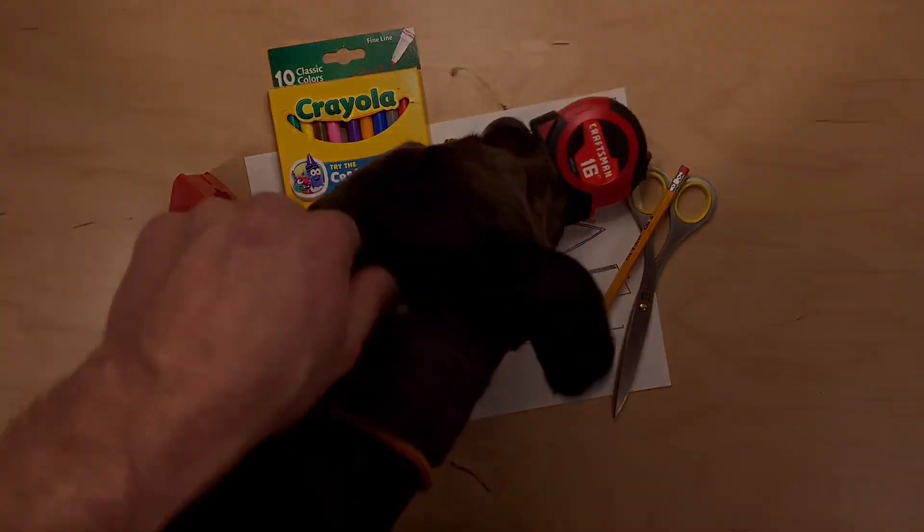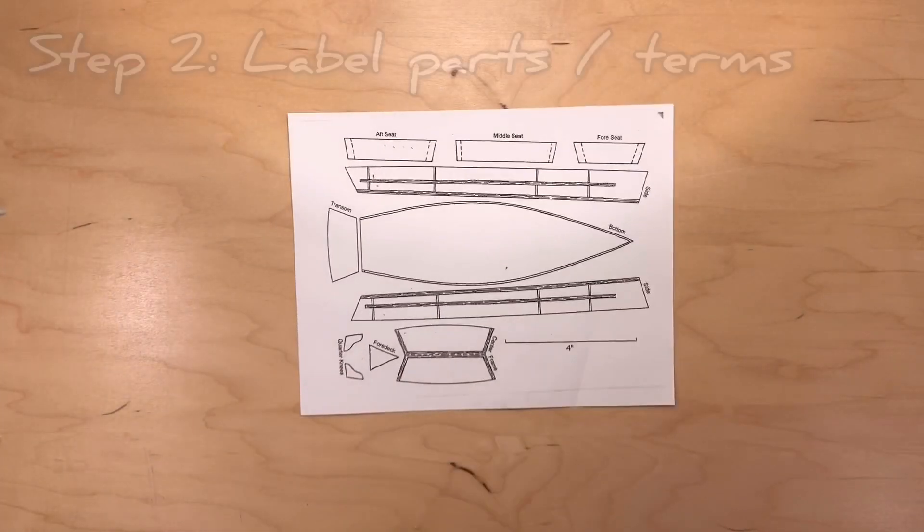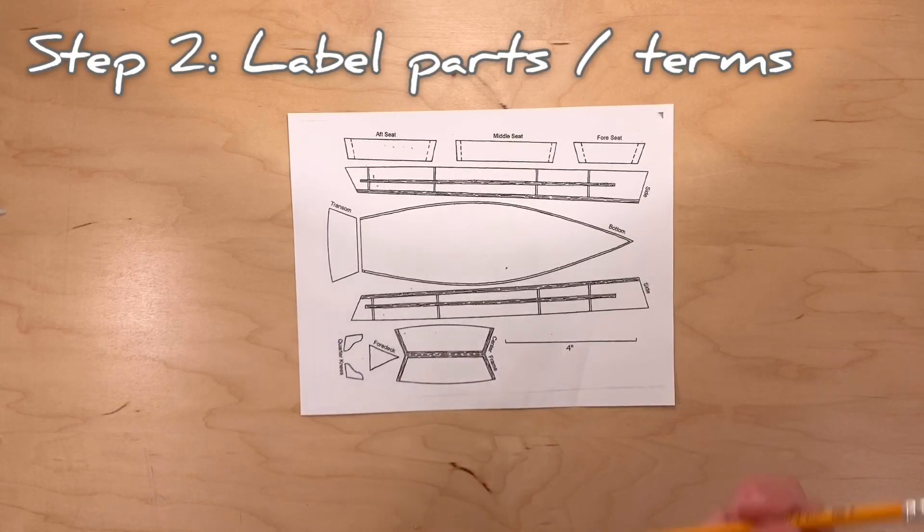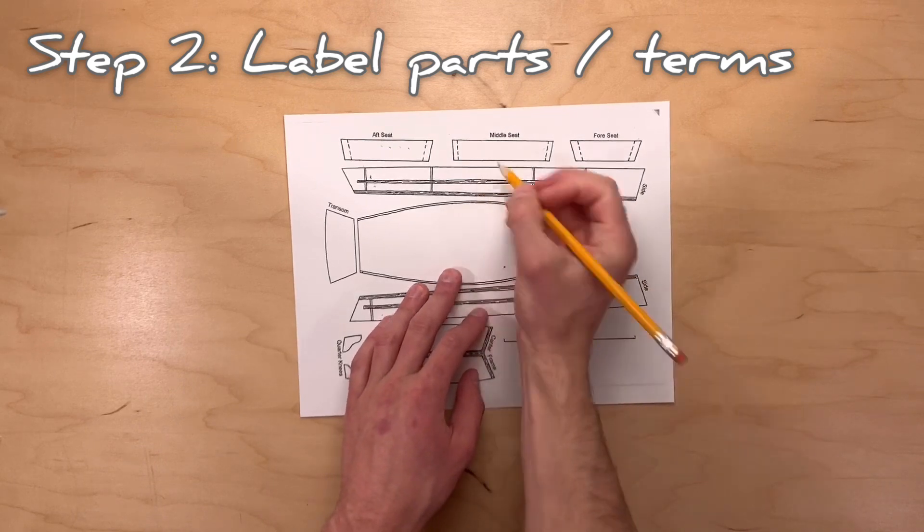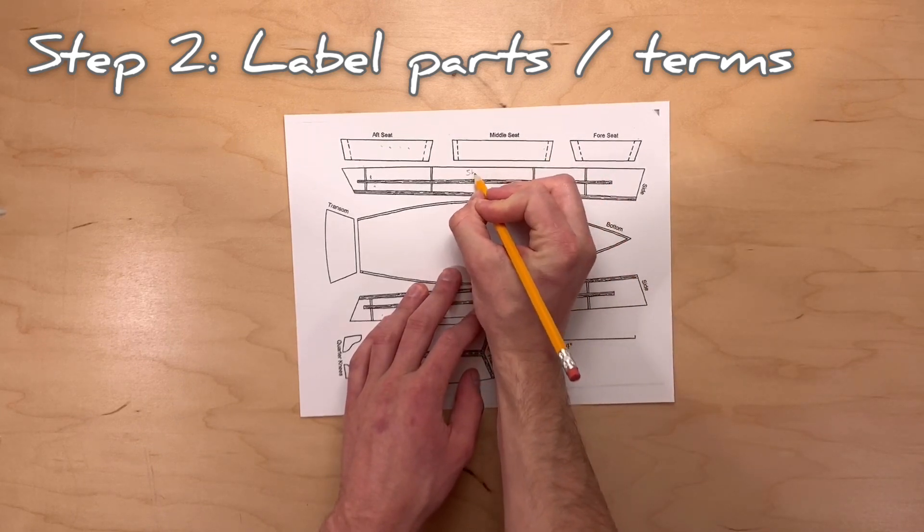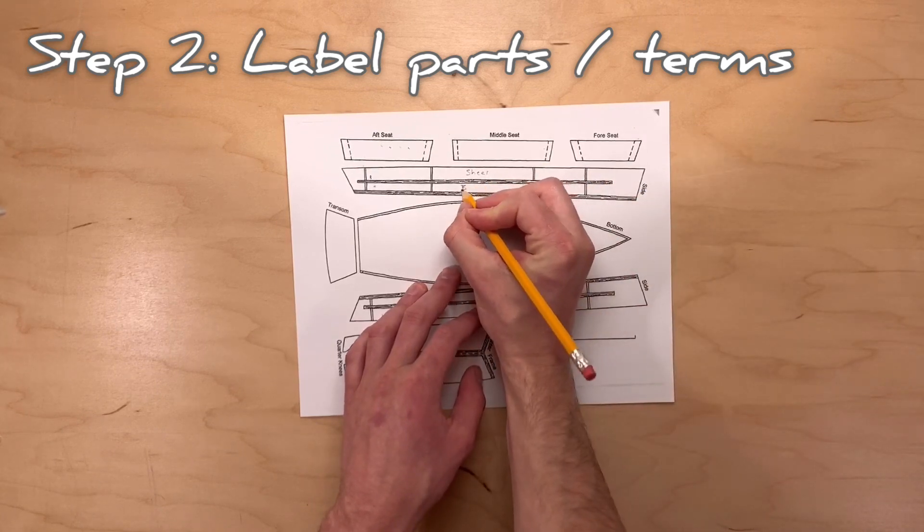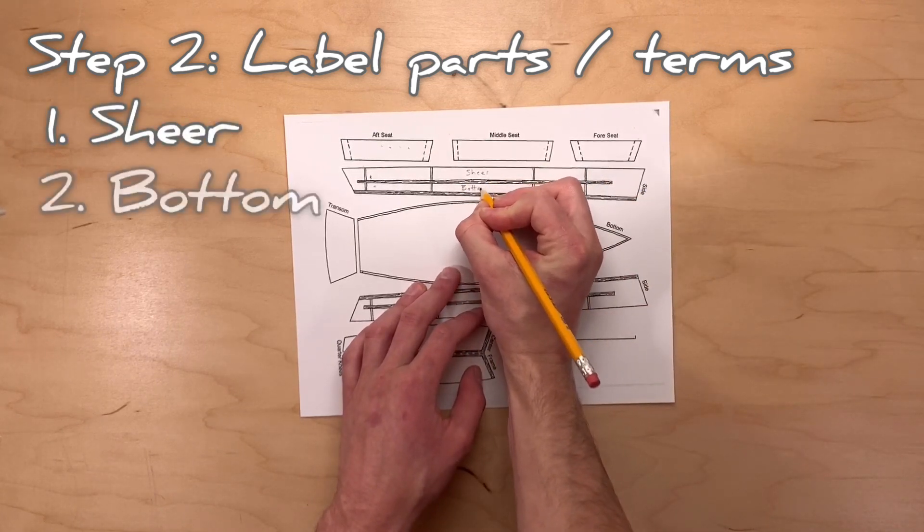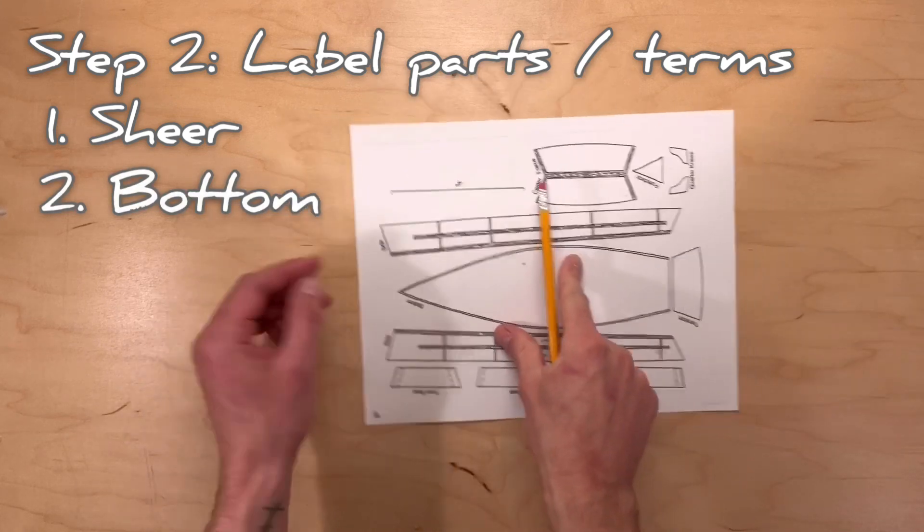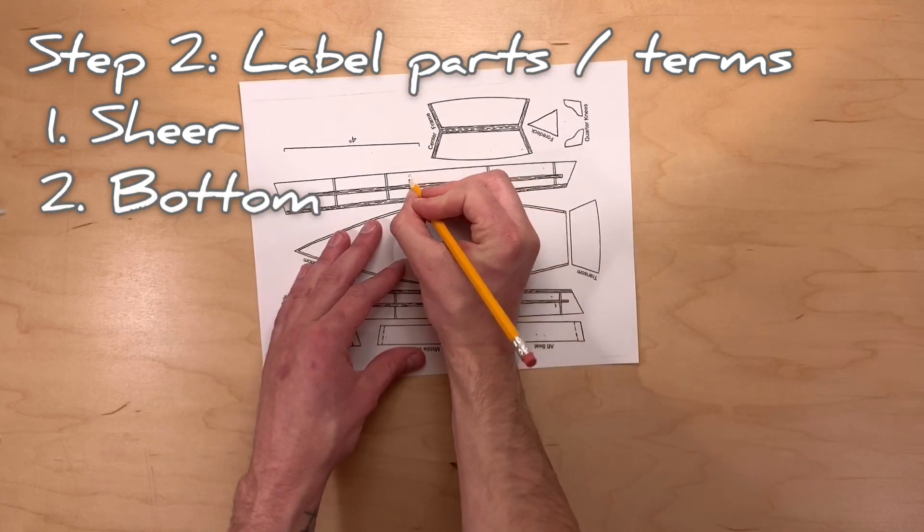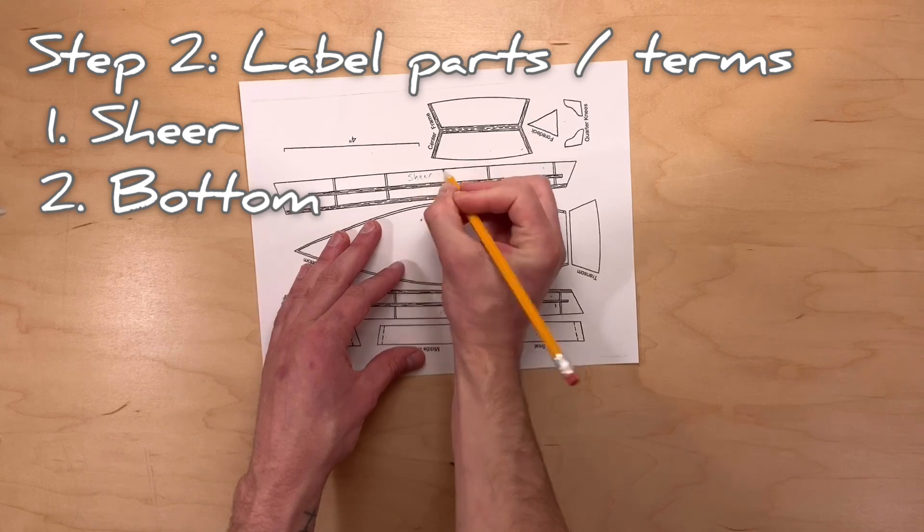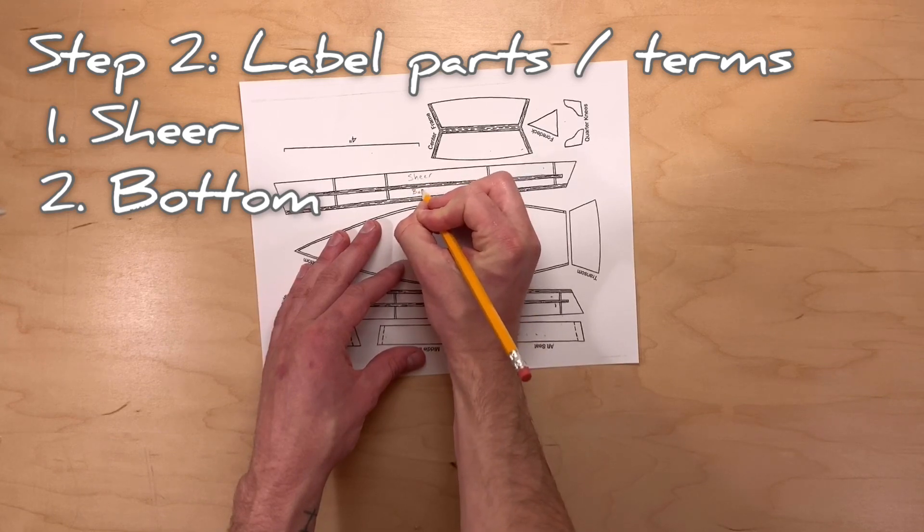After we've collected all of our materials, we next need to label all of the parts that we're going to cut out and make sure that we understand the terms in our boat plans. First, we need to label the sides of our boat. The top gets labeled with shear and the bottom gets labeled with bottom. It's important to make sure that we get these two labels correct so that we don't flip the sides of our boat upside down when we're assembling it.